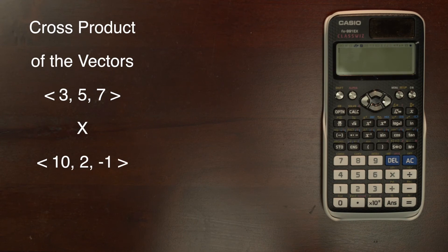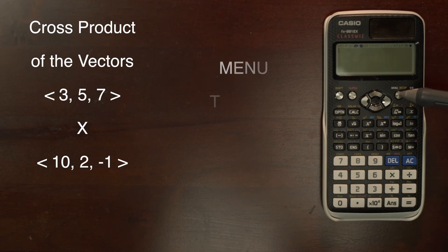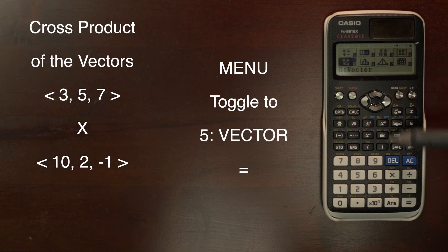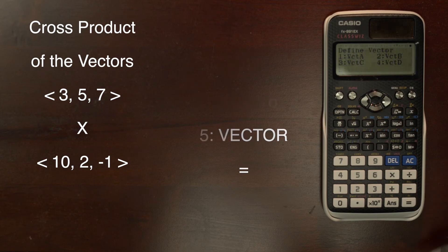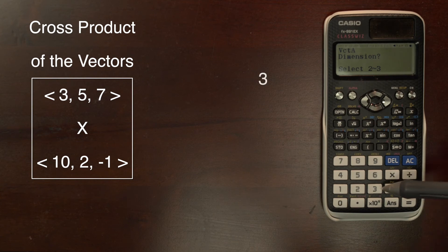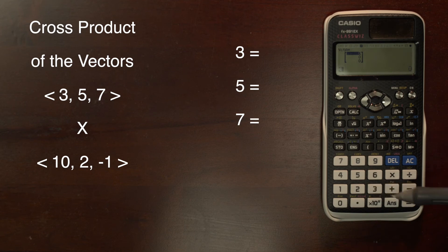We will now take the cross product of two three-dimensional vectors. So we define the vectors: menu, toggle over to vector, hit equal, and now select our first vector. It's three-dimensional this time. We enter in the data for that vector: 3, 5, and 7.